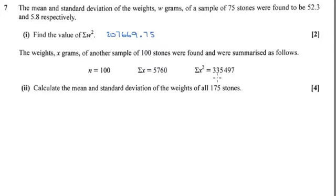We know that the mean of all the values, the new mean, is going to be all the numbers added together - the sum of the w's and the sum of the x's over 175. So we need to start off by knowing the sum of the w's, which we didn't have in part one.